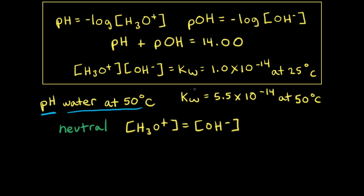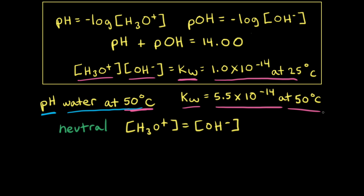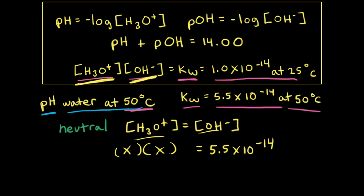Right now we don't know what those concentrations are, but we know that the concentration of hydronium ions times the concentration of hydroxide ions is equal to Kw. However, we have to be careful because Kw is only equal to 1.0 times 10 to the negative 14th at 25 degrees Celsius. At 50 degrees Celsius, Kw is equal to 5.5 times 10 to the negative 14th. If we make the concentration of hydronium ions X, then the concentration of hydroxide ions is also X, so X times X equals 5.5 times 10 to the negative 14th. That gives us X squared equals 5.5 times 10 to the negative 14th.